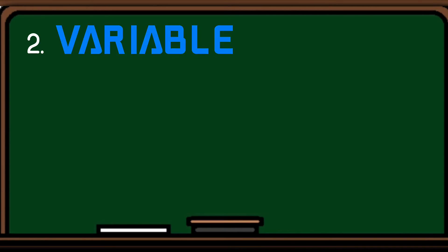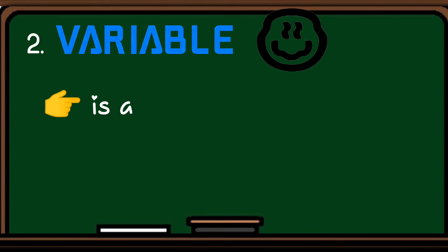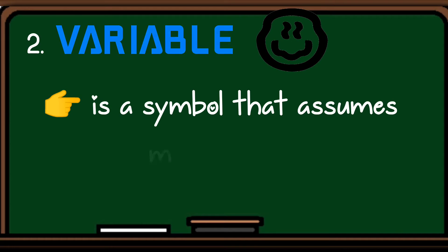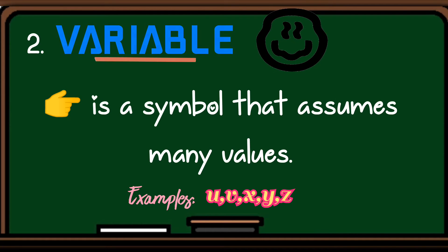Number two, a variable. A variable is a symbol that assumes many values. Examples, u, v, x, y, and z. So, ibig sabihin, halimbawa ang value ng x ko is equivalent to 2. So, x is equivalent to 2.